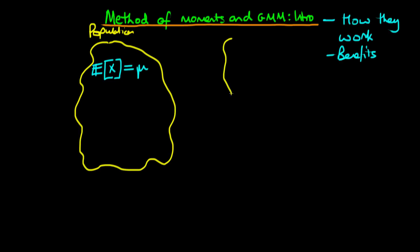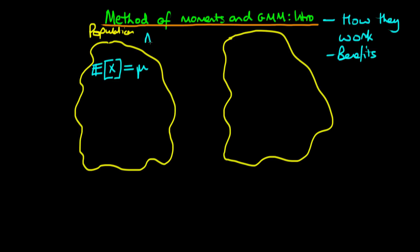The way these estimators actually work is via something which is known as the analogy principle. The analogy principle says that if we can come up with a similar quantity within our sample to that which is in the population, then perhaps we can use that sample equivalent condition to help us estimate parameters. We'd like to come up with a sample equivalent of this population moment condition — it's called a moment condition because I haven't specified the distribution, only the first moment, the fact that the expected value of x is equal to mu.